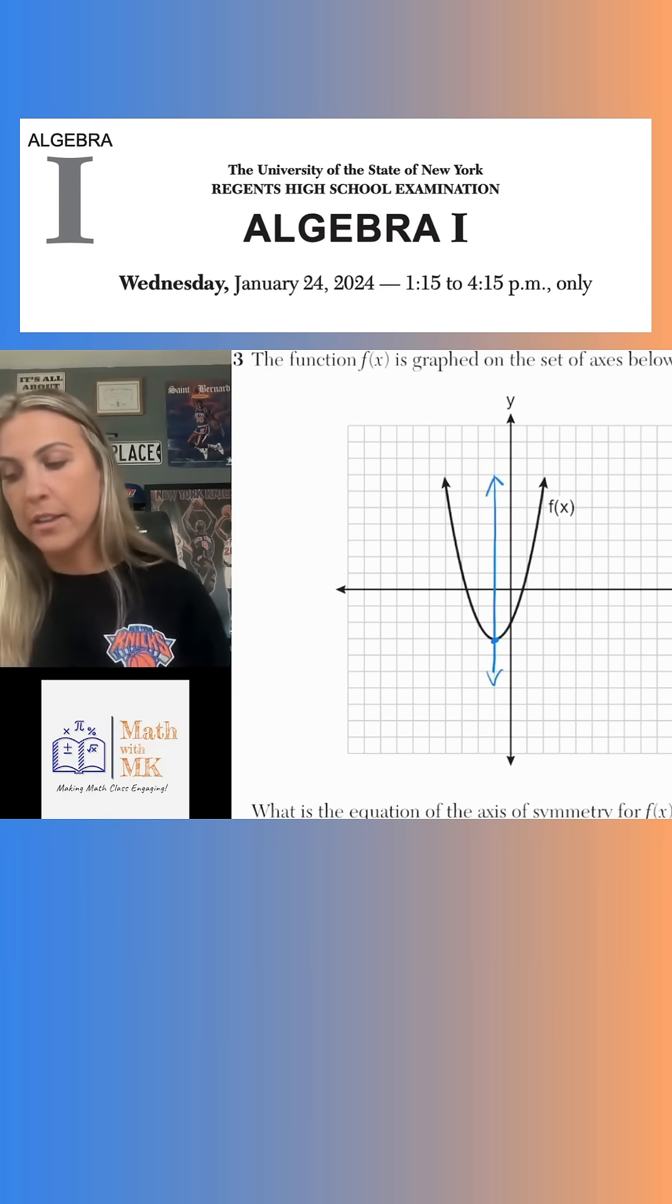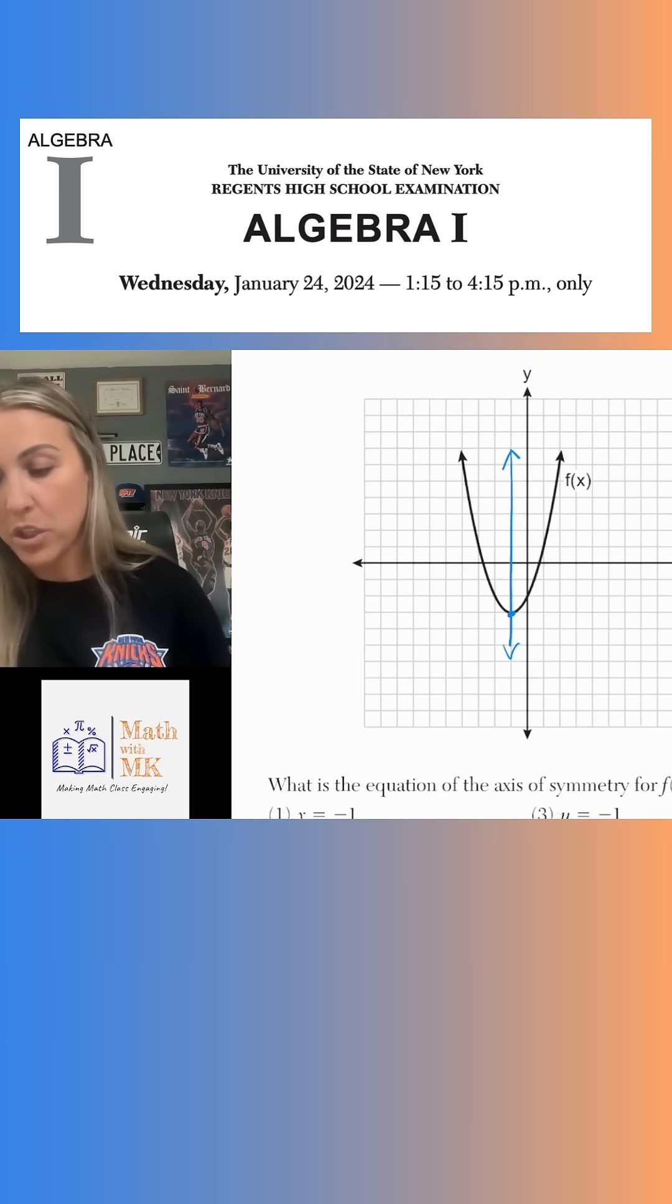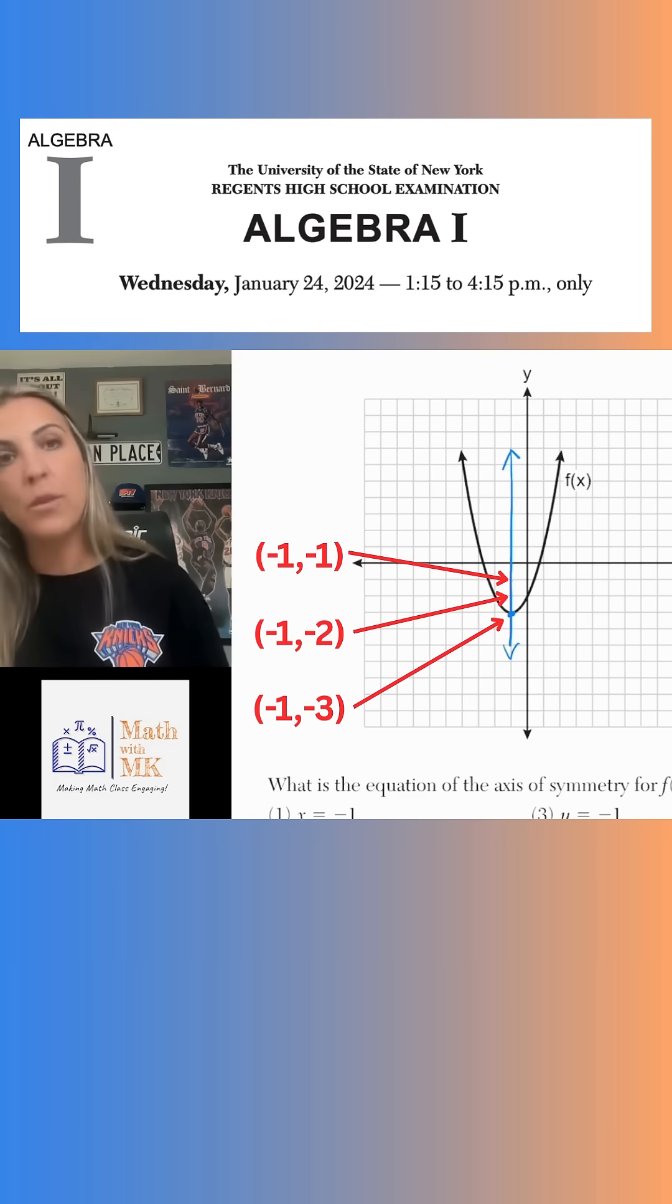Now, vertical lines all have the same x value. If I look at this blue line and I go to the point, let's just go to the vertex to start with. This is the point (-1, -3). If I go to the point right above it, that's (-1, -2), (-1, -1), (-1, 0). So you notice that every vertical line is always going to have the same x coordinate.